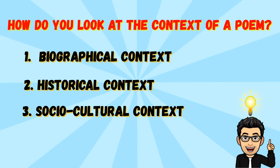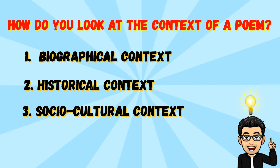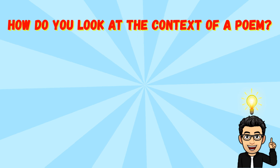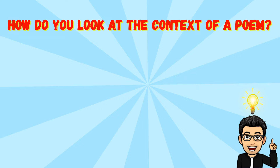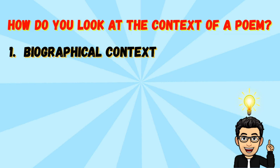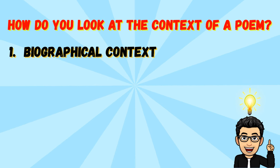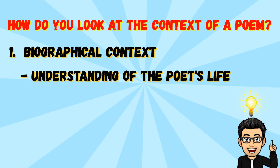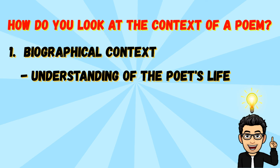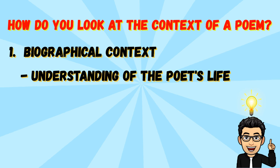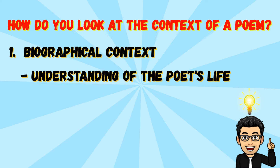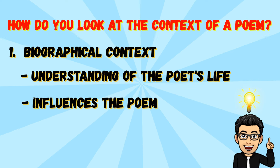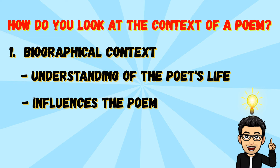Here are the things you need to remember when identifying context. The first is biographical context. This involves understanding the poet's life, including their background, personal experiences, and relationships. These factors can influence the poem's themes, tone, and imagery, offering insights into its deeper meaning.